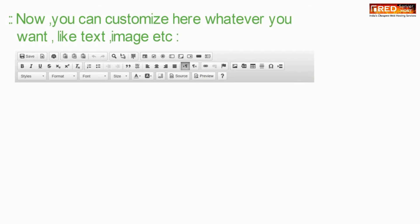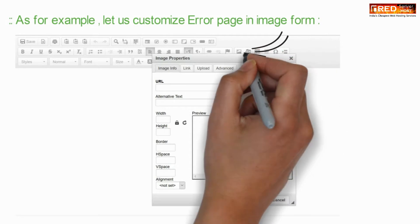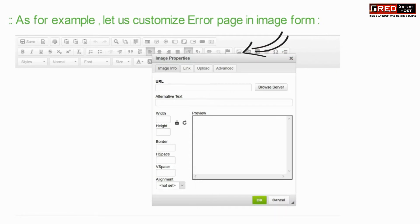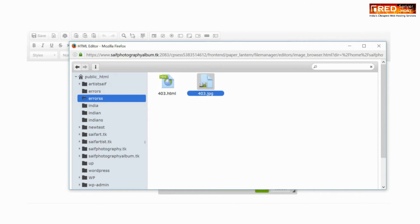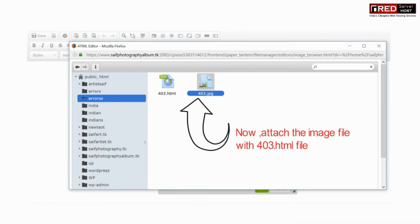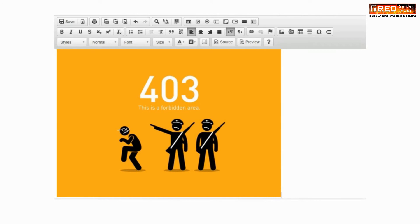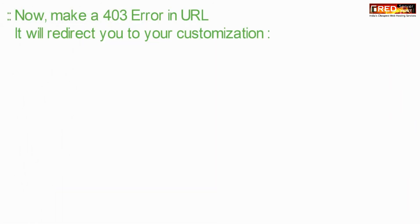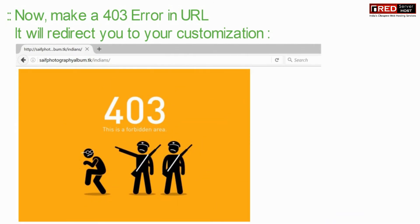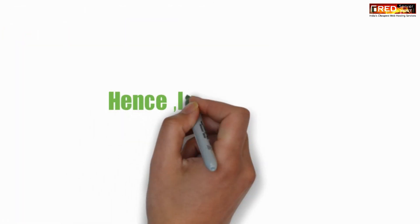Edit this file and place your custom code, whatever you like. For example, we have placed an image file on this page. Now you can click the save button to see the changes reflected.